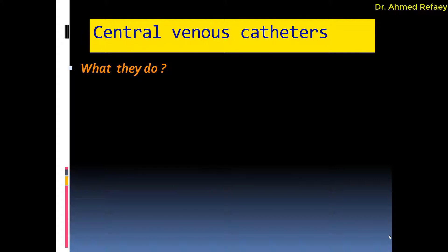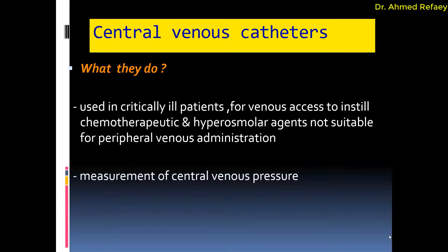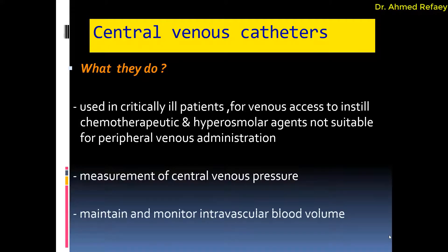Starting with central venous catheters — what they do: they are used in critically ill patients for venous access to administer chemotherapeutic and hyperosmolar agents not suitable for peripheral venous administration. They are also used for measurement of central venous pressure and for maintaining and monitoring intravascular blood volume.